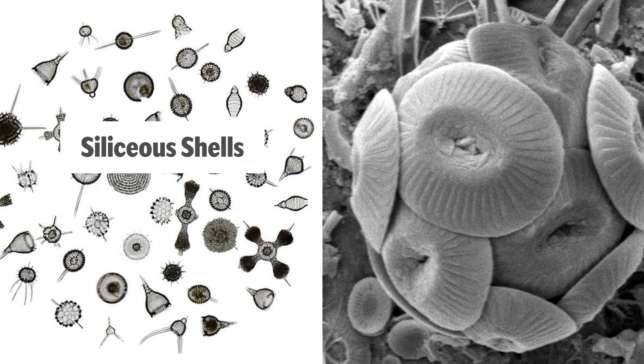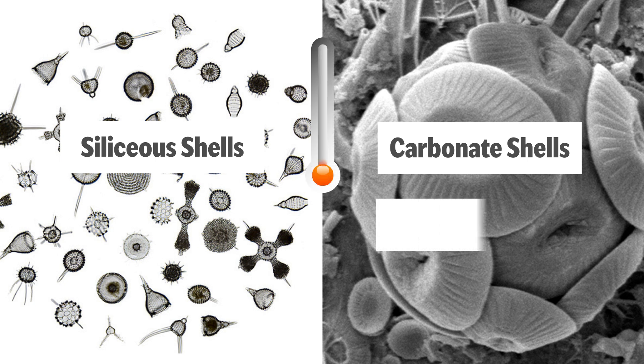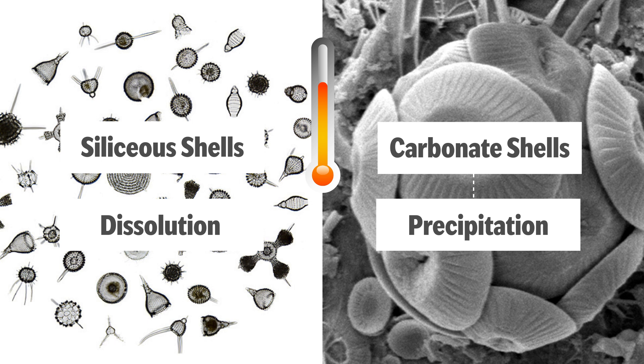In addition, siliceous shells in sediments overlying basement rock have been dissolved, and carbonate shells show signs of carbonate precipitation on their outer surfaces. These changes are consistent with calcium carbonate precipitating and siliceous shells dissolving in warm waters.